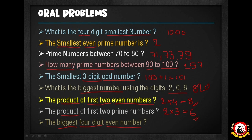What is the biggest 4-digit number? The biggest 4-digit number is 9999. So 9999 is the biggest 4-digit number. You can see that 9999 is the biggest number with 4 digits.